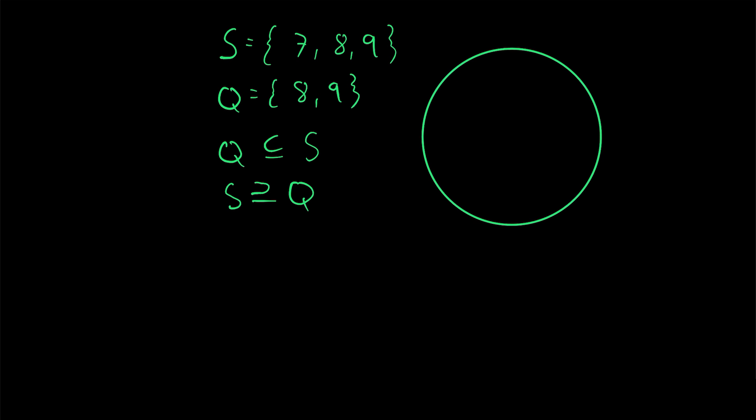If we wanted to represent these sets with a Venn diagram, we could write, this is S here, and this is Q. And the elements 8 and 9 are in Q, and of course, they're also in S.